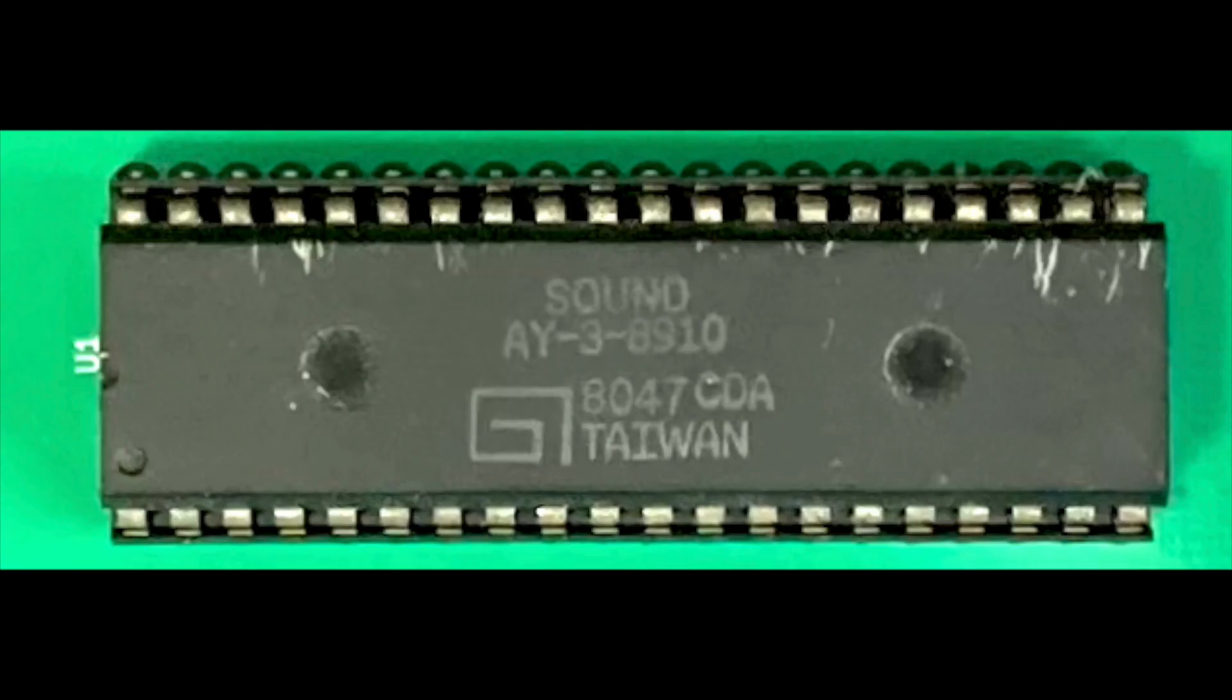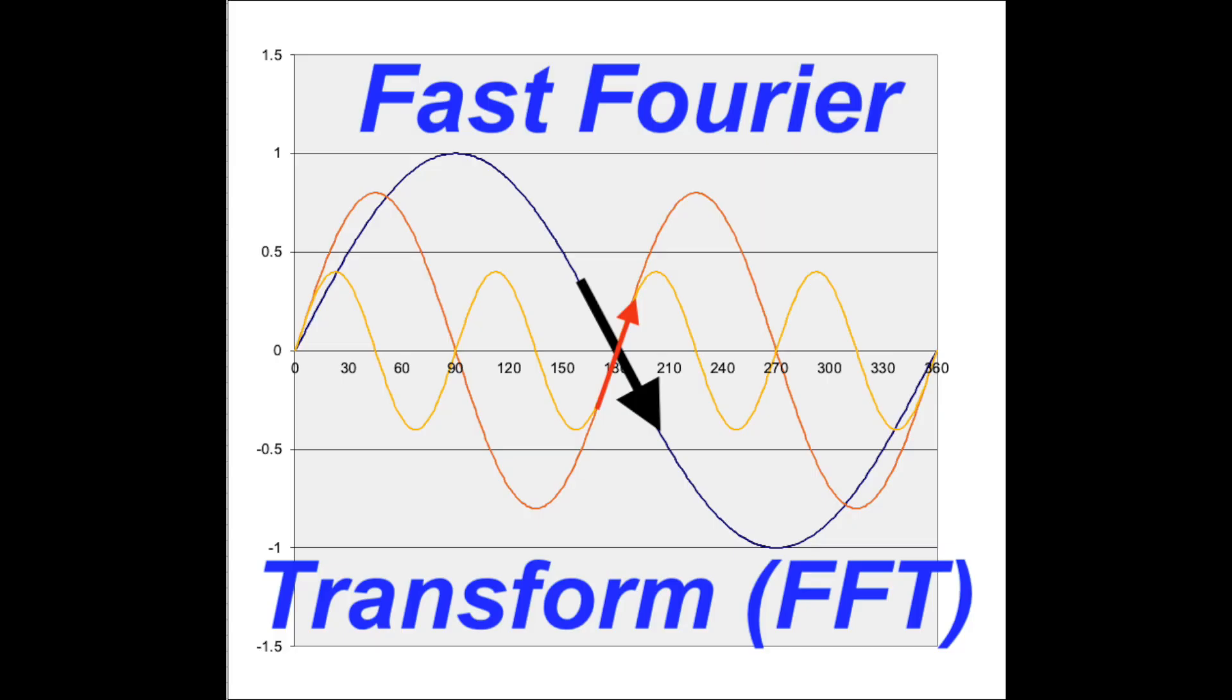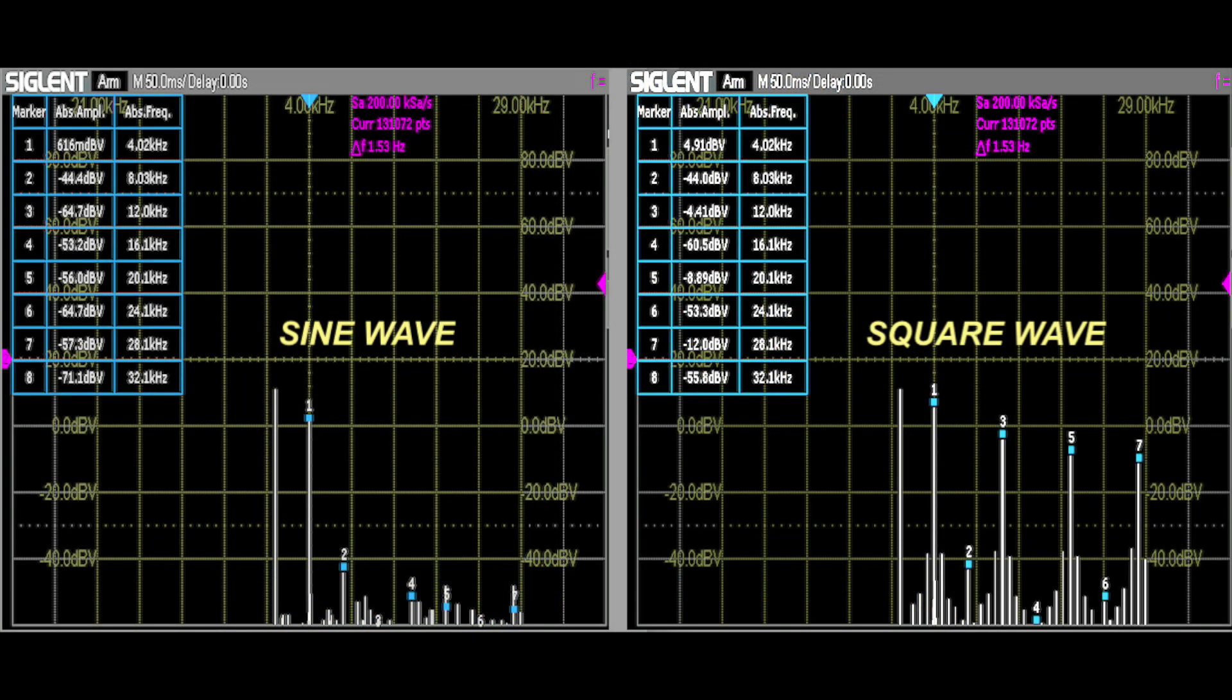In the case of the AY38910 chip, it can only produce square wave tones. In addition to the spectrograph, we can visually represent these sine and square waves on an oscilloscope using the fast Fourier transform function.